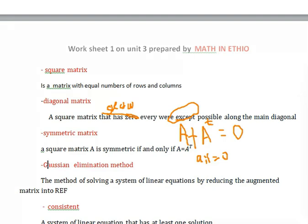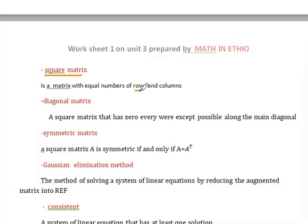Square matrix: A matrix is square if it has equal number of rows and columns. A diagonal matrix is a square matrix that has zero everywhere except possibly along the main diagonal.